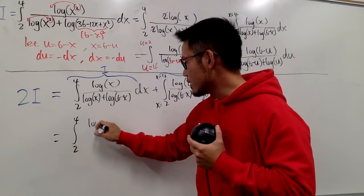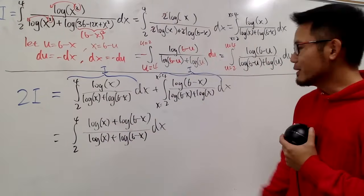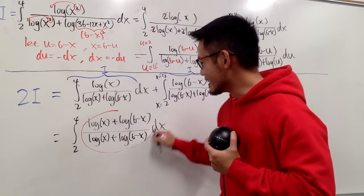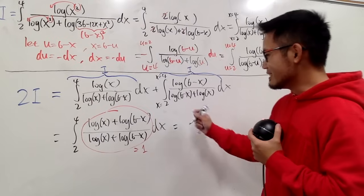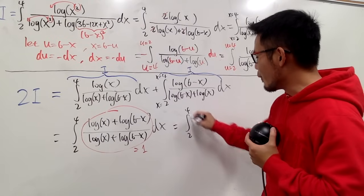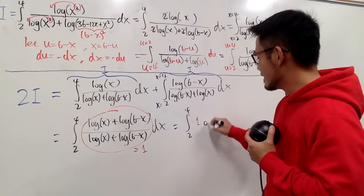We will have log of x. Okay, what's the inside now? Everything together inside, this is nothing but just 1, which is super easy. And this is equal to the integral from 2 to 4 of 1 dx.